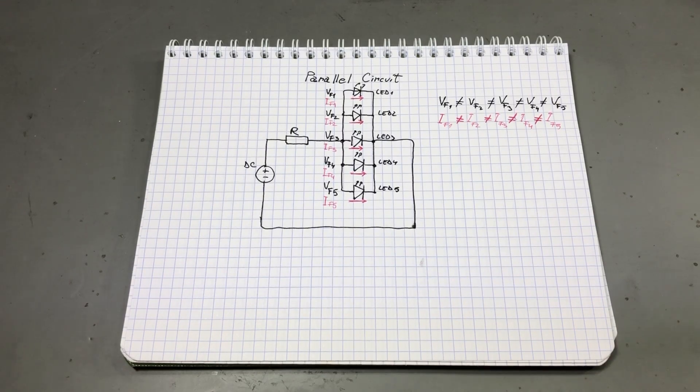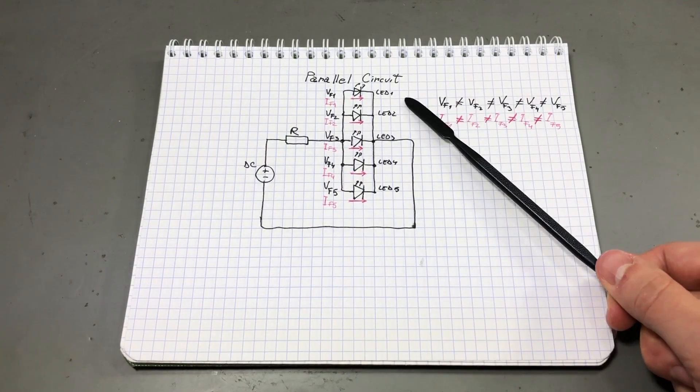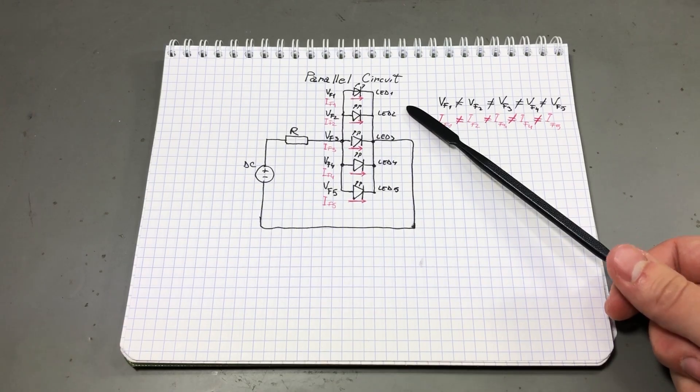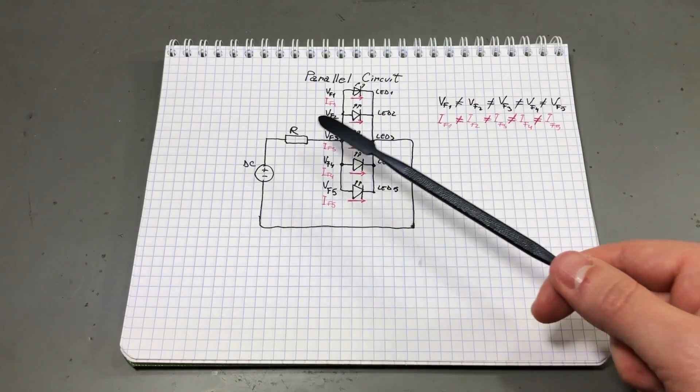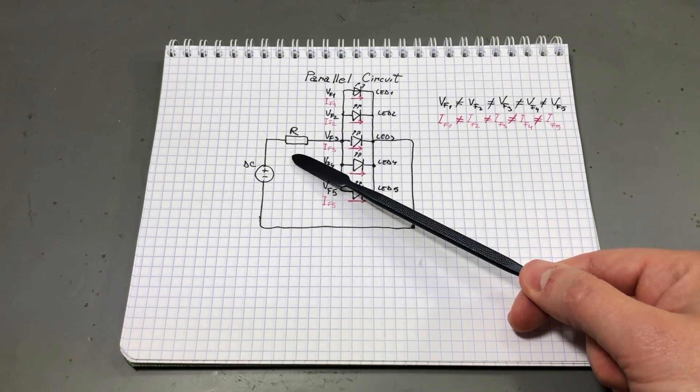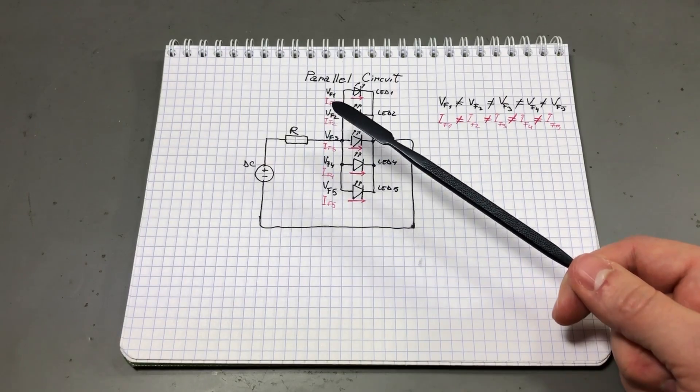As you can see it's pretty simple to limit the current and drive a single LED but what happens if we need more LEDs? We could connect them in parallel like I'm drawing here in this example and we can use the same resistor to limit the current but we run into some problems.